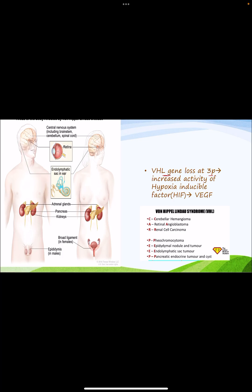The VHL gene is present on chromosome 3p. When deleted, it causes increased activity of hypoxia-inducible factor, which is normally suppressed by this gene. Increased HIF activity causes activation of various growth factors like vascular endothelial growth factor, leading to angiogenesis, and insulin-like growth factor, causing proliferation and vascular proliferation in renal cell carcinoma.